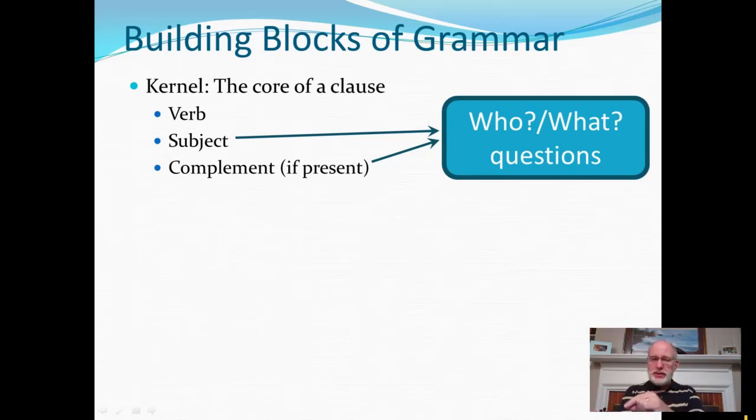Now, you've got to ask it just like that. Who or what? Not for whom, for what reason, by whom, by what. No, no, no. So who or what? The bare who or what questions are your very powerful diagnostic for identifying subject and complement of the verb once you have identified the verb.